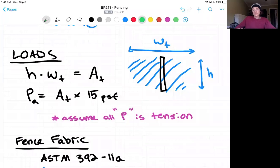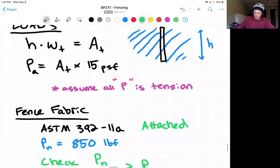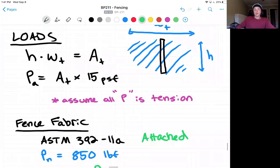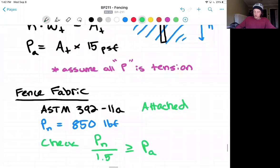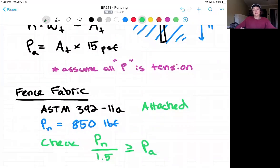So we can find details about zinc coated fence fabric with the ASTM 392-11A standard that I have attached below. And what that gives us is our nominal capacity. It's going to be 850 pounds force. So we'll take that 850 pounds, we'll compare it to our PA from above, and we'll use a factor of 1.5, a factor of safety of 1.5, and we'll make sure that that check passes.